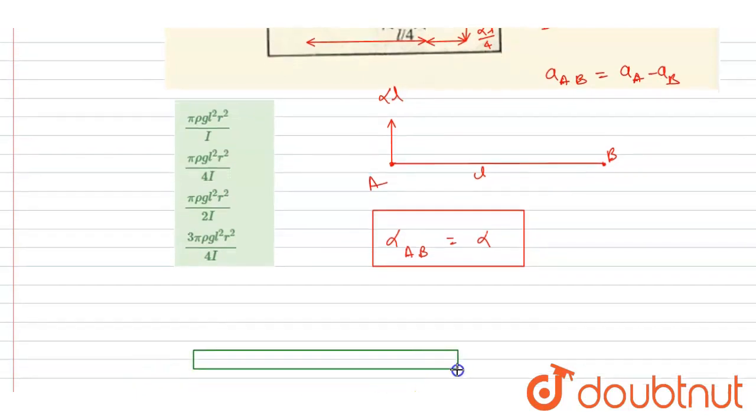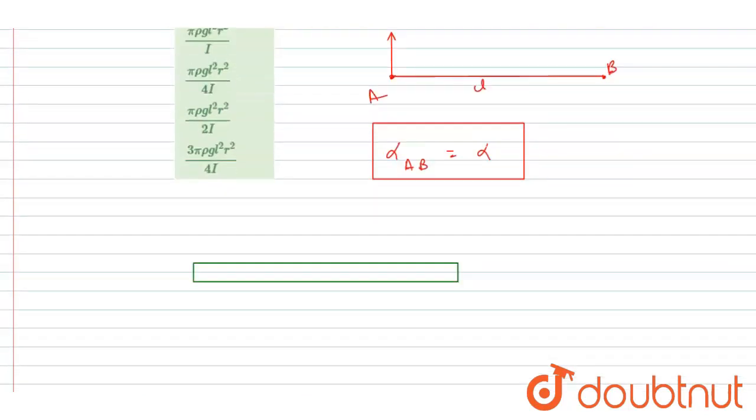Here, weight will be acting at the center of mass in the downward direction, but the buoyant force will act in the upward direction exactly at the geometrical center. Because buoyant force doesn't know whether the rod is uniform or non-uniform.